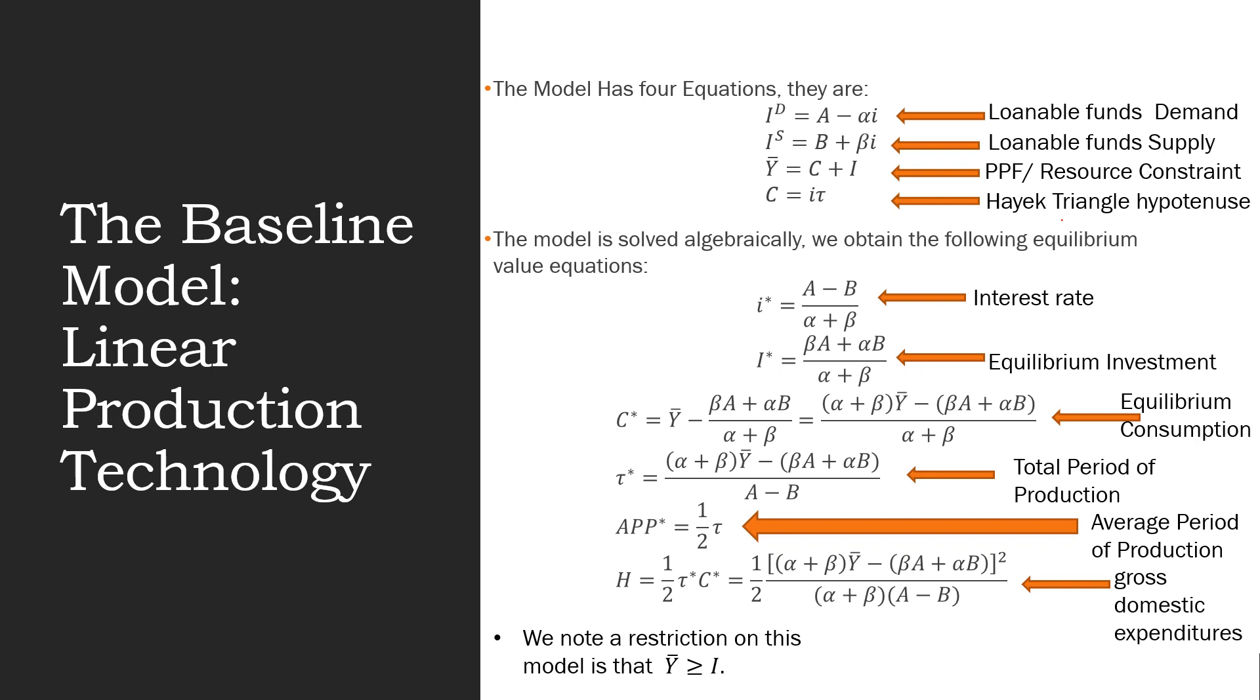From these equations we can obtain equilibrium values for our interest rate, equilibrium investment, equilibrium consumption, the total period of production, the average period of production, and gross domestic expenditures. We note that a restriction on this model is that Y̅ (our PPF or resources) has to be greater than our investment—that's just a feasibility constraint.